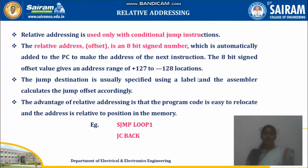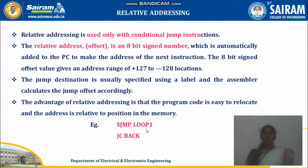Next is relative addressing mode, which is used with conditional jump instructions. For example, SJMP — short jump — directly specifies a label like loop1, which will have a certain address in the instruction. When the controller executes this line, it automatically jumps to that label. The relative address is an 8-bit signed number. The jump destination is usually specified using a label, and the assembler calculates the jump offset accordingly. The advantage of relative addressing is that the program code can be easily relocated, as the address is relative to the position in memory.